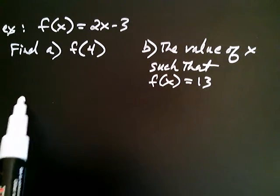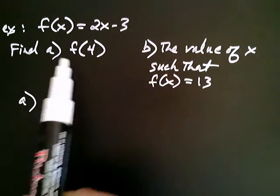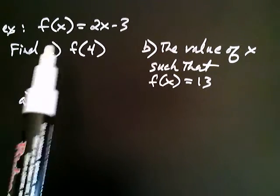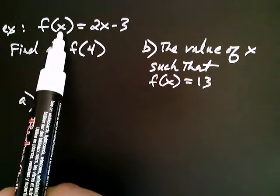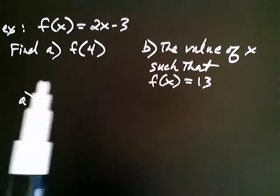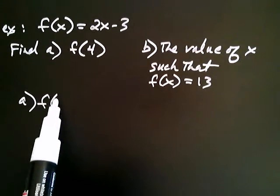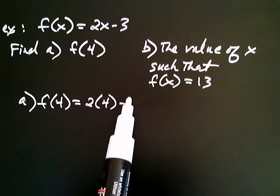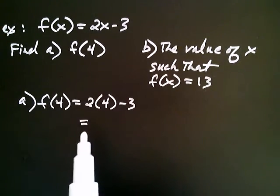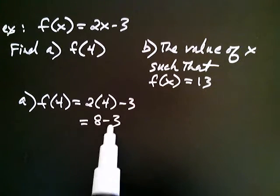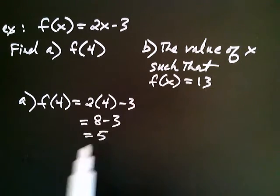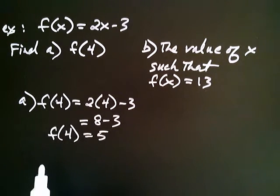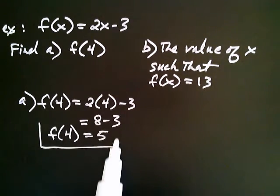For part a, this says find f at 4. Well, according to this, f at anything, you just take that anything and multiply it by two and subtract three. So f at 4 is equal to 2 times 4, take away 3. I can do that. That's 8, take away 3, or 5. So in other words, f at 4 is equal to 5. That's our answer for the first part.